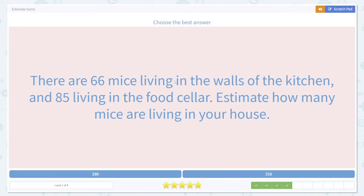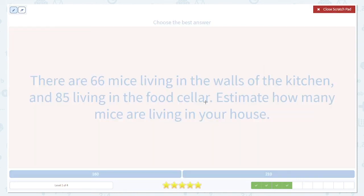Here's another example. There are 86 mice living in the walls of the kitchen. That's entirely too many mice. And 85 living in the food cellar. Estimate how many mice are living in your house. Once again, the question is asking us to estimate the combined number of mice.